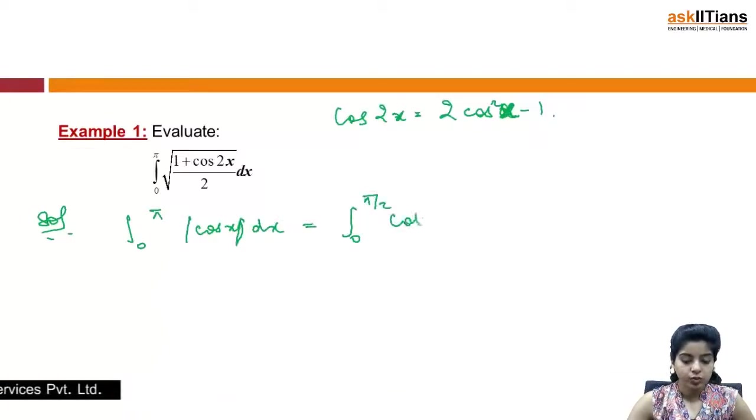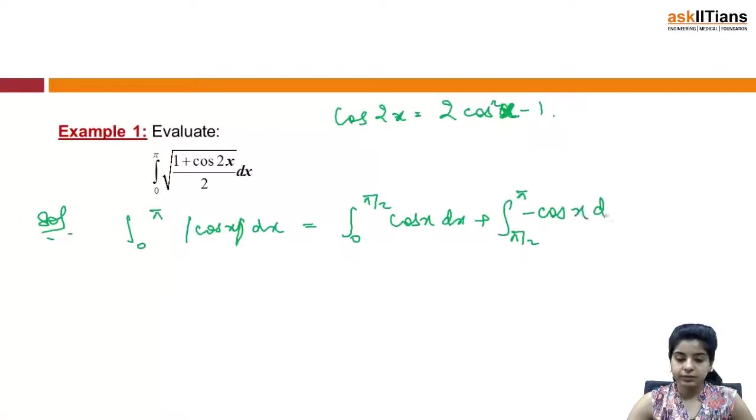This can be written as integral 0 to pi/2 cos x dx plus integral pi/2 to pi minus cos x dx. This is a simple integration: sin x from 0 to pi/2, plus minus sin x from pi/2 to pi.